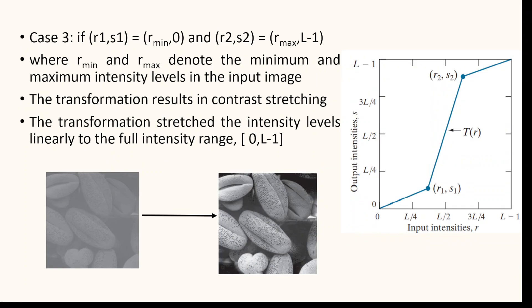The next case is where R1, S1 equal to R minimum and 0, that is R1 equal to R minimum, S1 equal to 0 and R2 equal to R maximum and S2 equal to L minus 1. Here R minimum and R maximum denote the minimum and maximum intensity levels of the input image. The transformation results in contrast stretching.